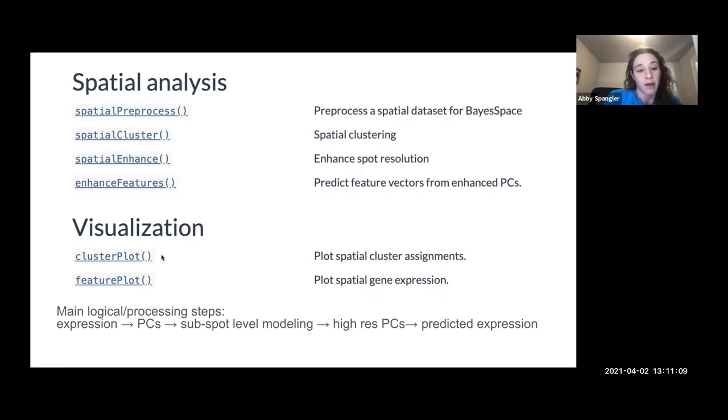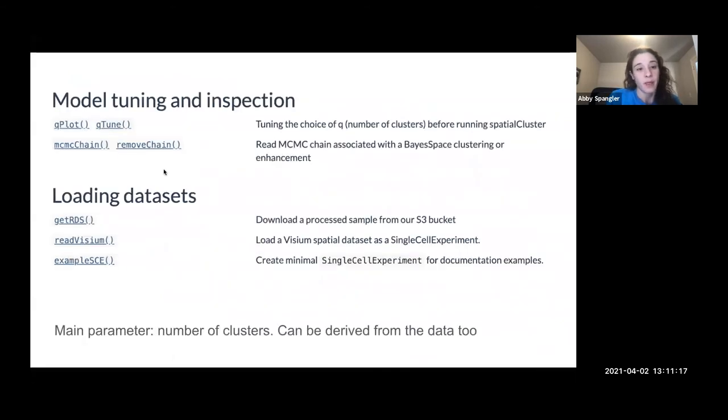And then they have some visualization functions for plotting your clusters, as well as some tuning for the model. So Qtune will basically run the initial clustering algorithm with a varying number of clusters. You can decide the number of clusters you're interested in, and then it will make a plot of the pseudo log likelihood of those clusters just to help you pick the number of clusters that you want.